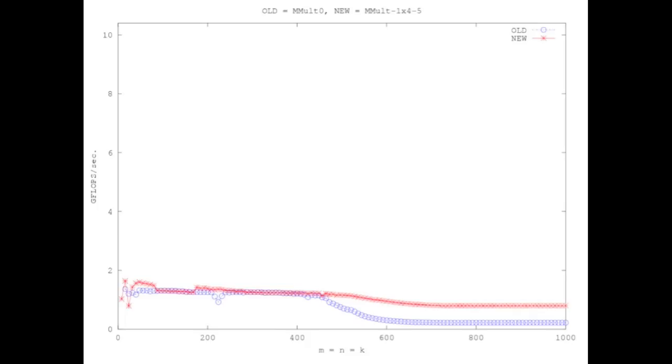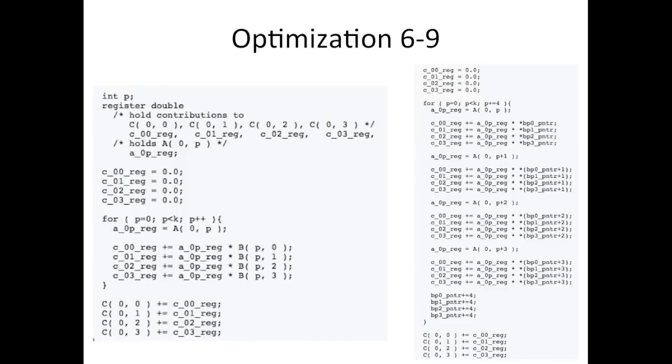But if you compare this now to the top line in the graph, which is 100% utilization, you see that you're not anywhere near peak performance. So what else can we do? Well, in C, you can actually explicitly indicate that certain variables must be kept in registers. And notice that you're getting a lot of reuse out of the elements in C. And so you would want to place those in registers.